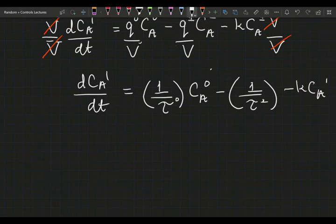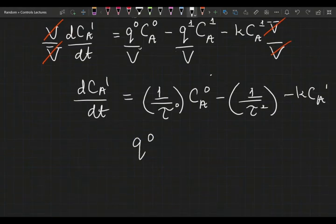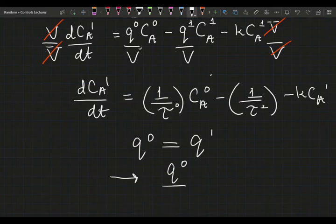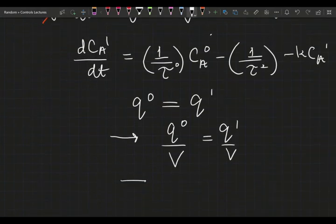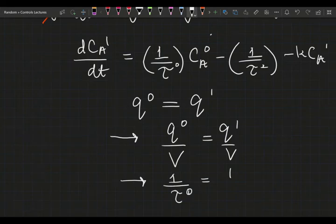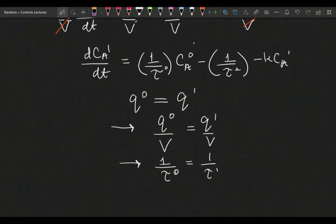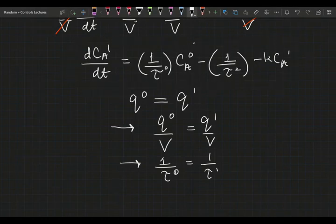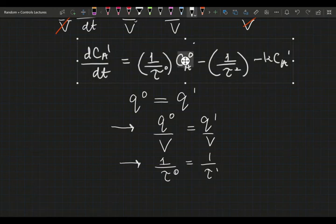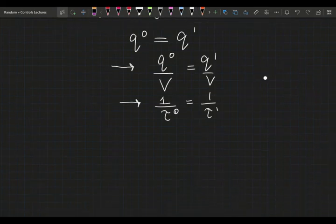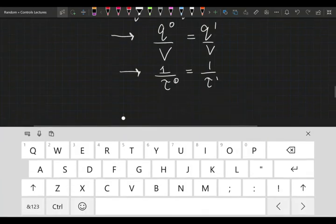I'm going to call this 1 over tau zero, 1 over tau one, minus KC_A1. Okay. Question. Now, since we have an overflow reactor, Q0 must equal Q1. If that's the case, that means Q0 over V must equal Q1 over V. And if that's the case, it means that 1 over tau zero has to equal 1 over tau one. So, we can just reduce the number of variables we have here. And I'm just going to rewrite this.